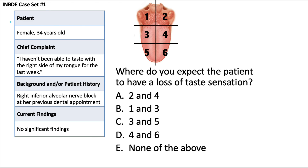Here is the patient box for this case set. We have a female patient, 34 years old, and her chief complaint is that she hasn't been able to taste with the right side of her tongue for the last week. Of note, she had a right inferior alveolar nerve block at her previous dental appointment, with no other significant findings. Go ahead and read through the first question, and then we'll go over the answer together.